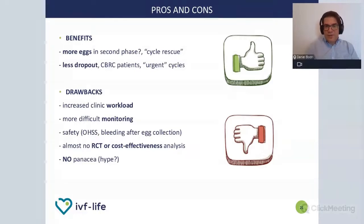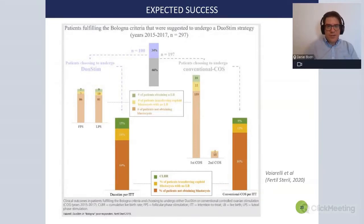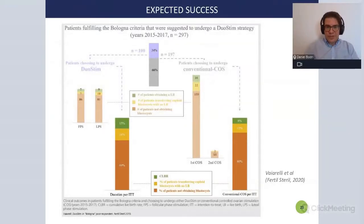There is definitely an interest in double ovarian stimulation. As Caroline mentioned, it's quite new and relatively experimental, although many clinics are doing it. We should not think this approach is the best solution for any type of patient. I'd like to briefly show some published data. There are an increasing number of studies, but many are still retrospective and I'm not aware of too many randomized clinical trials. This is an interesting dataset from the Italian group, which has large experience with this approach — they studied almost 300 patients who were Bologna poor responders.